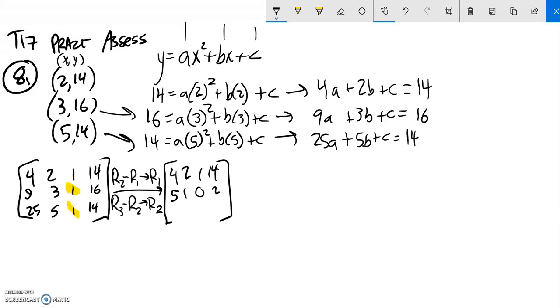And then to do this one, row 3 minus row 2, 25 minus 9, that's a 16. 5 minus 3 is 2. 1 minus 1 is 0 again by design. 14 minus 6 is negative 2. So I've got this far.